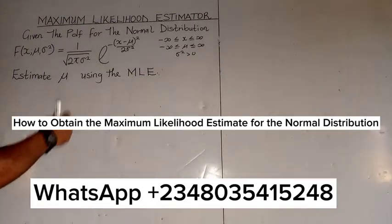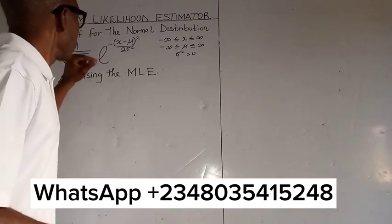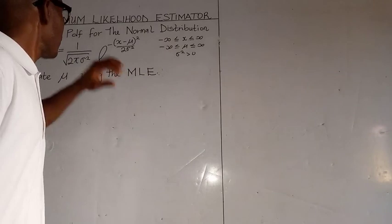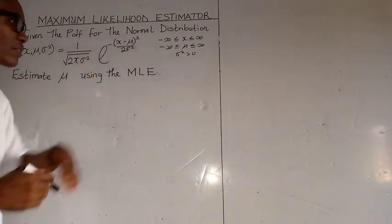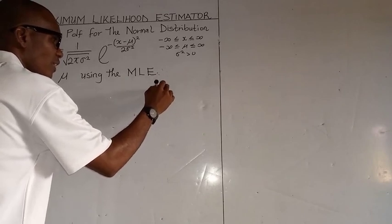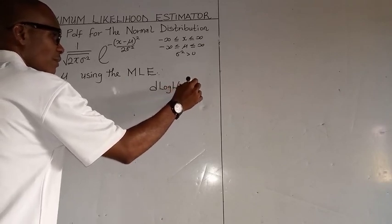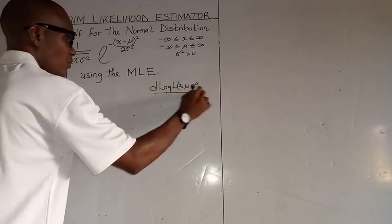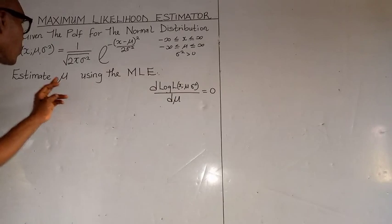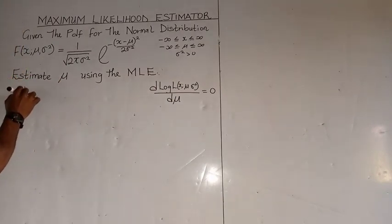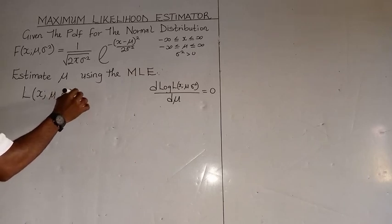How to estimate mu using the maximum likelihood estimator for the normal distribution. To obtain the maximum likelihood estimator, we recall that we take the differential of the logarithm of the likelihood function. This time we have the mean and the variance. If we differentiate first with respect to the mean and set it equal to zero, we get the mean.